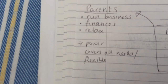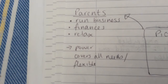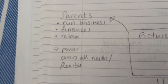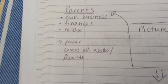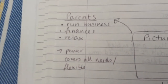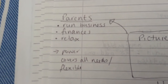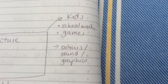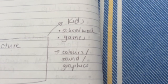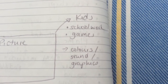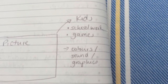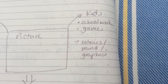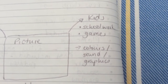On one side of the picture I'm going to have reasons why parents would want to buy the Apple — running a business from home, working from home, looking at family finances, or just relaxing at the end of the day. The features I'm concentrating on are the power it gives you, that it covers all the things you might need to do, and that it's flexible. On the other side, for the kids — and because the grown-ups are paying, I've put schoolwork first — it's going to be good for their education, but also great for games. Because of that fun nature, I want to bring out the color, sound, and graphics features.